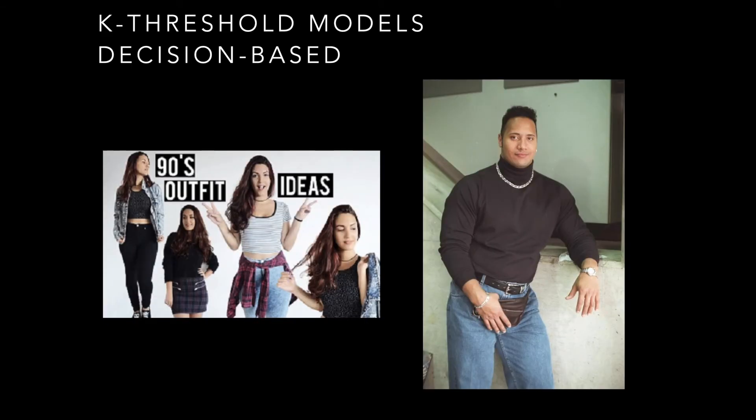This leads to interesting kinds of behaviors, like people adopting fidget spinners — once enough of my friends are playing with them, I kind of want one myself — or chia pets, where if I see enough of my friends have one, then I kind of want one. Fashion also has some relationship here: looking back at 90s fashion, you can imagine this being driven by a K threshold model where you see many friends wearing a particular outfit, and if you don't adopt this behavior, you start to stick out.